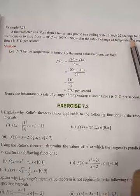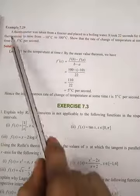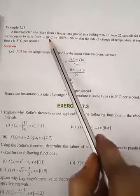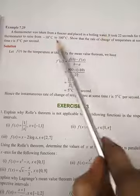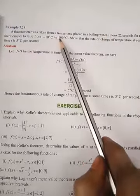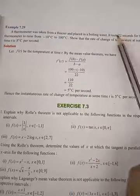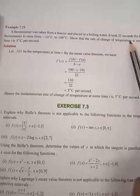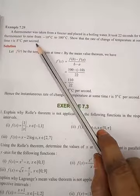It took 22 seconds for the thermometer to rise from minus 10 degrees Celsius to 100 degrees Celsius. Show that the rate of change of temperature at some point t is 5 degrees per second.